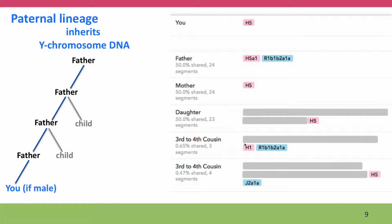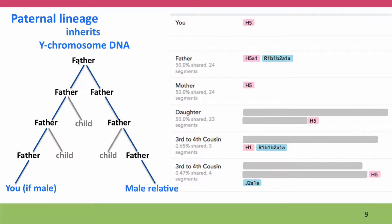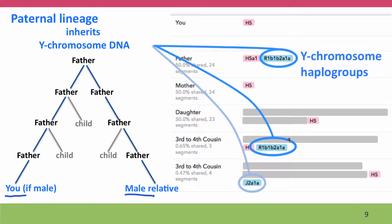If we think about Y-chromosome DNA, this story is very similar. We can't sequence ancestors, but we can compare living individuals. We see that my father shares a Y-chromosome haplogroup with someone predicted to be a third or fourth cousin. He doesn't share a haplogroup with another cousin.